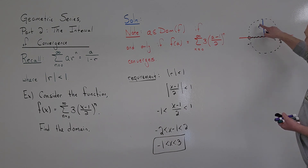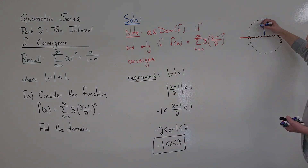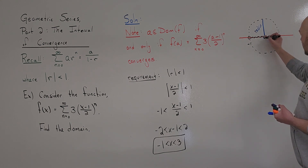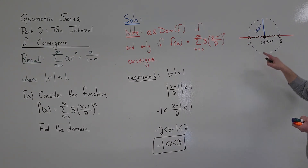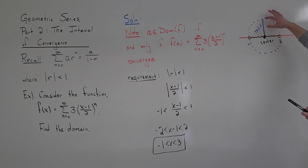The radius of the circle goes from the center to an endpoint. I'll use the word 'radius' since we're already using R for the geometric series ratio. Since this is a circle, we can also talk about the center of the circle, which lies halfway between the two endpoints. The radius is half the length of that interval.